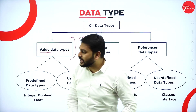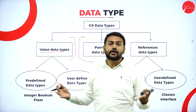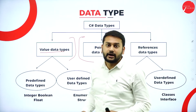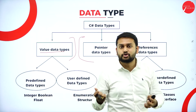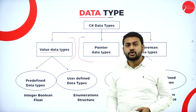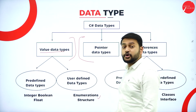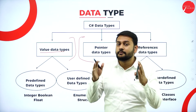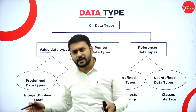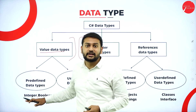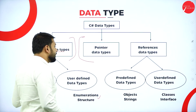Within value data types, there are two categories: predefined data types and user-defined data types. Predefined data types are already defined — the user just uses them, for example int, bool, and float. User-defined data types allow the user to customize their own data type using constructs like enumerations and structures.